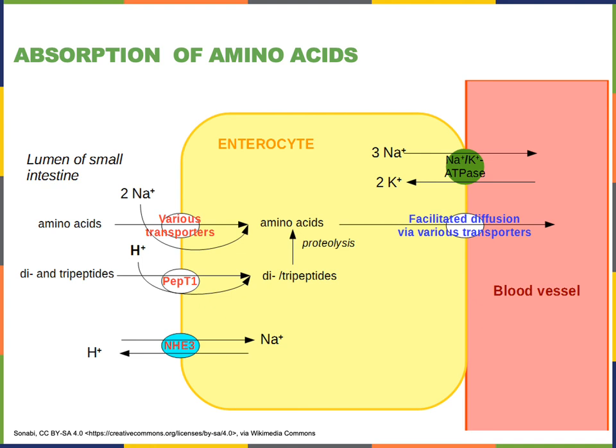Within the enterocyte, amino acids exit the basolateral surface by facilitated diffusion. As the concentration of amino acids in the extracellular fluid rises, amino acids diffuse through the capillaries into the blood and are then distributed throughout the body.